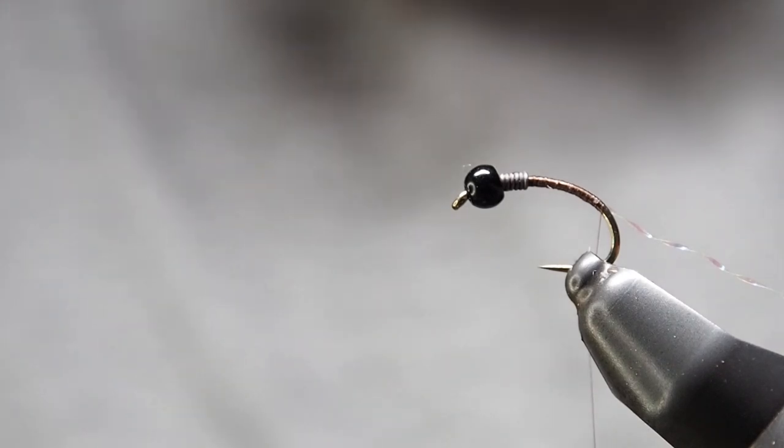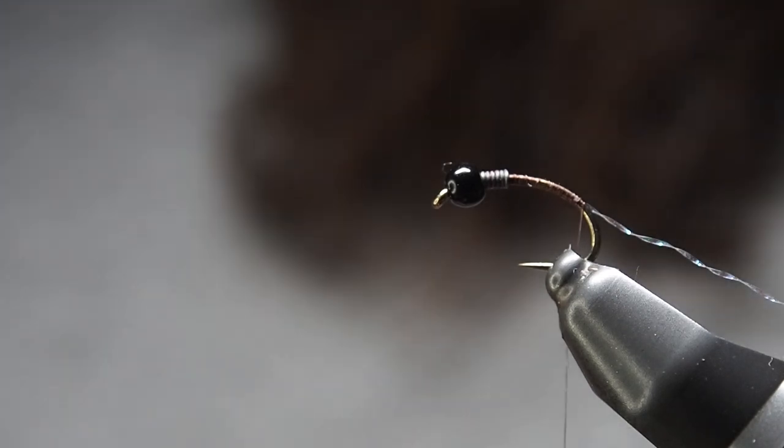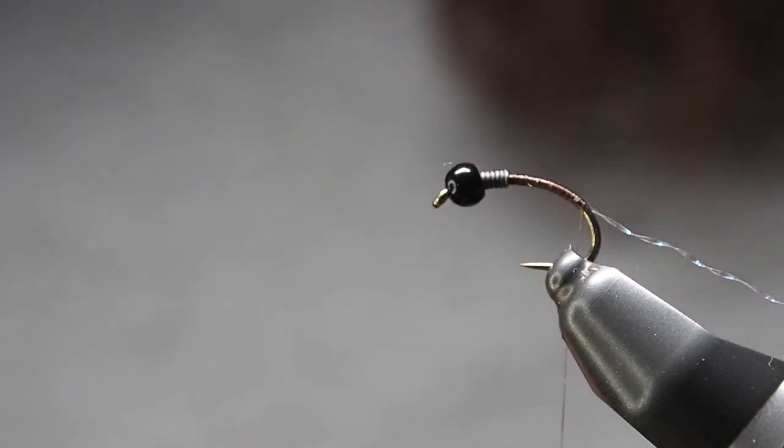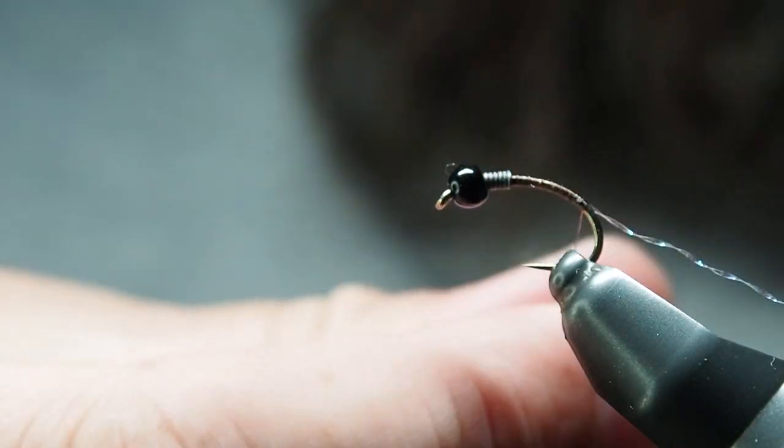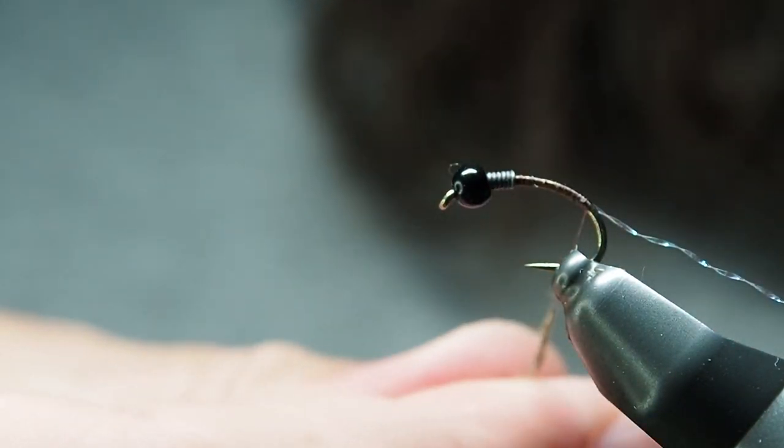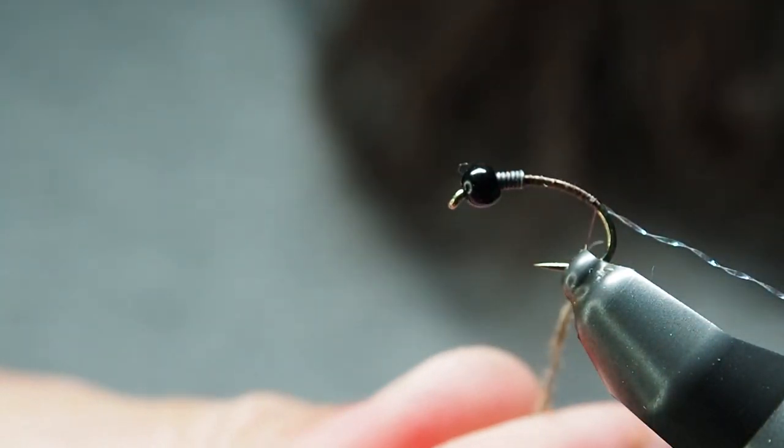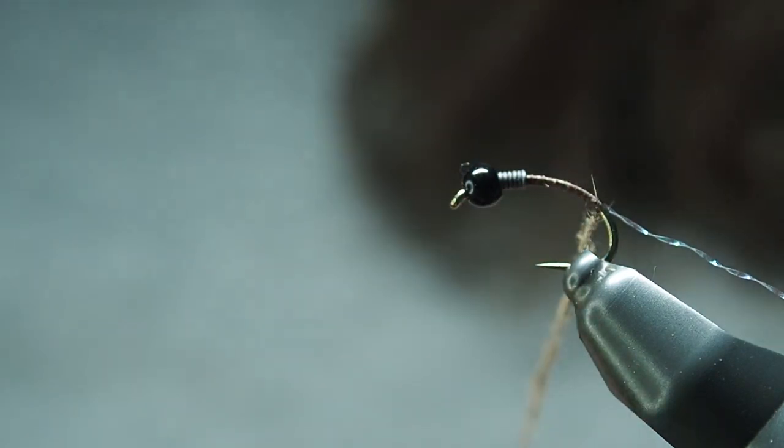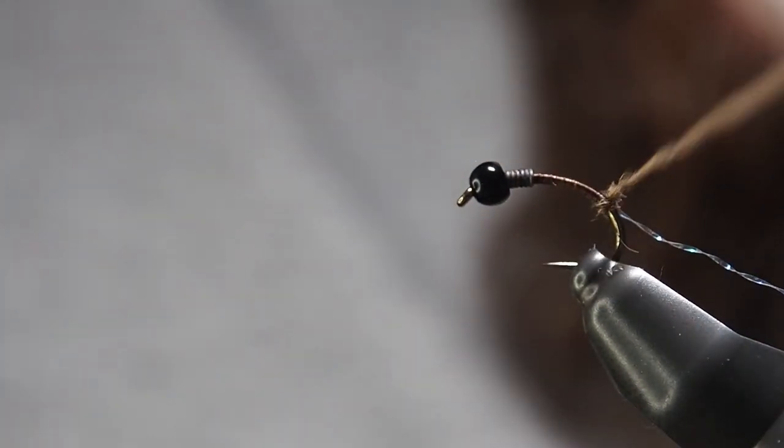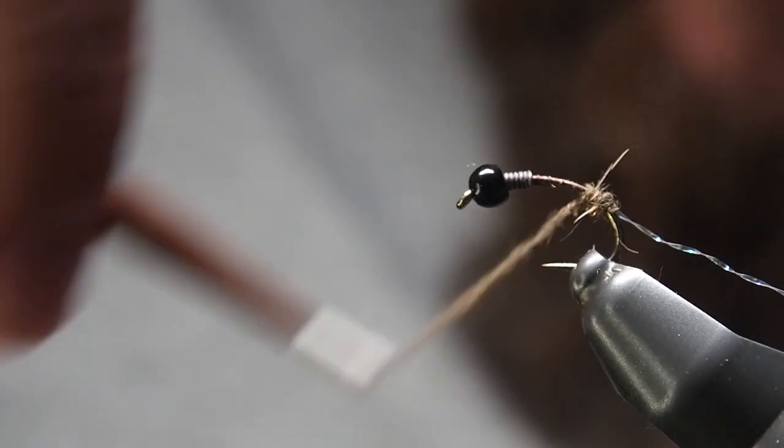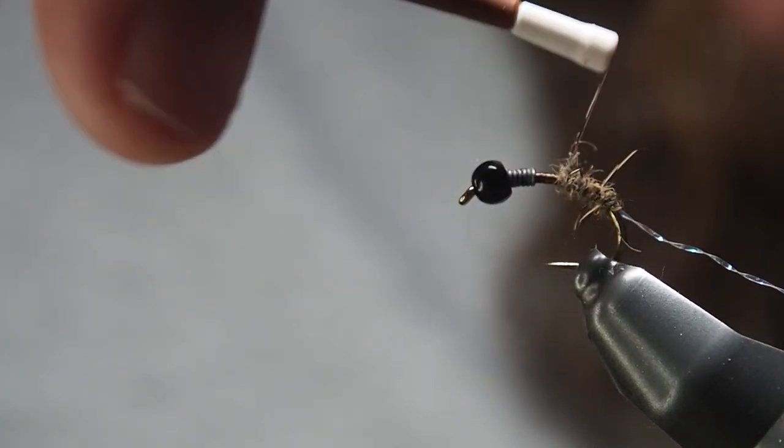Next up we're putting our dubbing up the body. I'll try to keep this nice and slim. I'm using fox squirrel, just natural fox squirrel. It's definitely become my favorite dubbing as far as natural furs go. You want to make your little dubbing noodle and keep it as thin and tight as you can. Then you just want to build up your body and march forward up the hook.